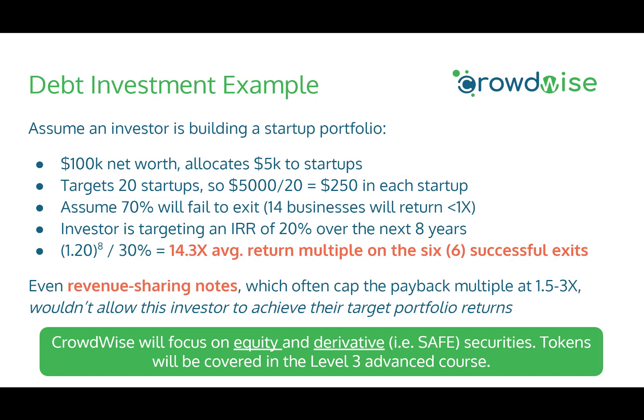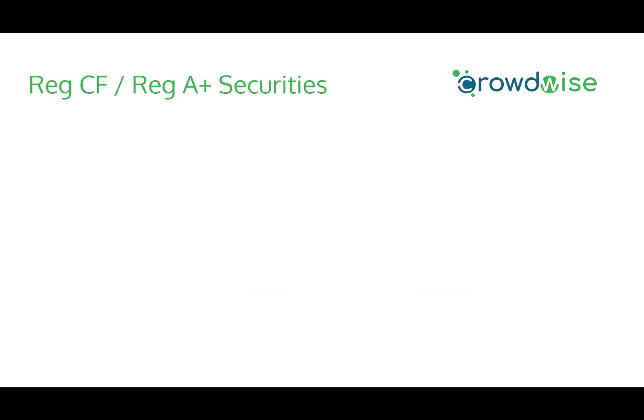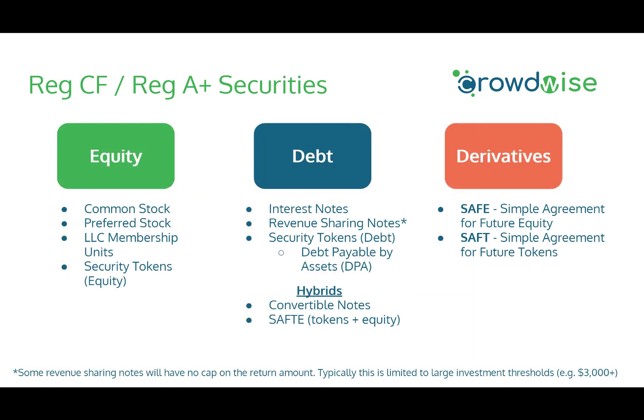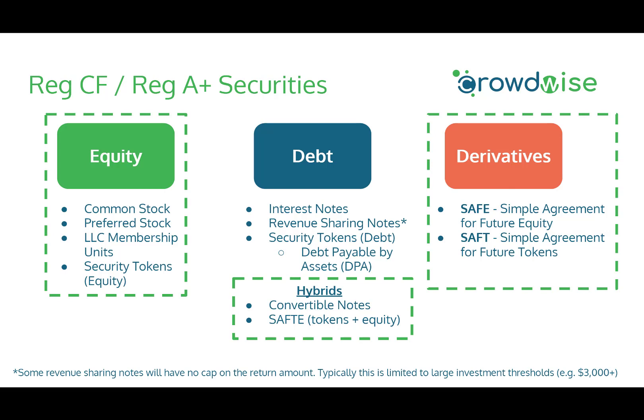Here at Crowdwise, we primarily focus on the equity and the derivatives such as SAFE and convertible note securities. Tokens will also be covered in our Level 3 Advanced Investor courses. Going back to Reg CF and Reg A Plus securities, the ones that financial investors should focus on are primarily equity, derivatives, and hybrids. Let's now dive in deeper to each one of these to understand common terms.